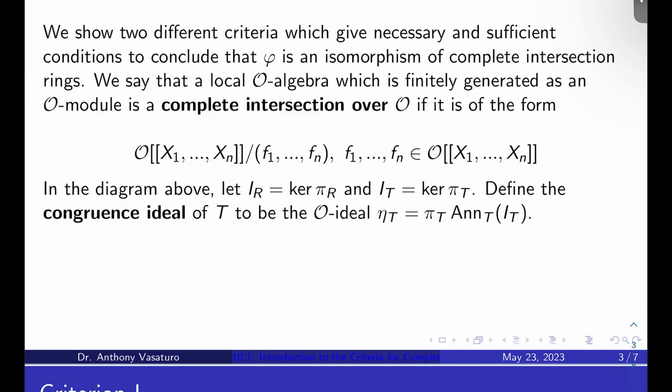In that diagram above, that commuting triangle, we're going to let I_R be the kernel of π_R. We're going to let I_T be the kernel of π_T. So this guy lives in R and this guy lives in T. And then we're going to define the congruence ideal of T to be the O-ideal η_T, which is π_T of the T annihilator of I_T. So you take things in T that are killing the kernel of π_T, and you look at the image under π_T of those things. This is a very important ideal.